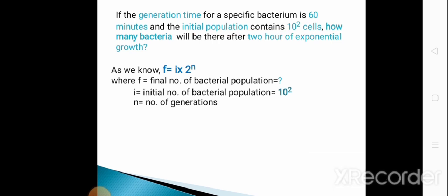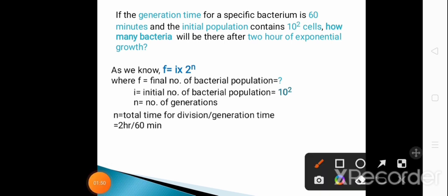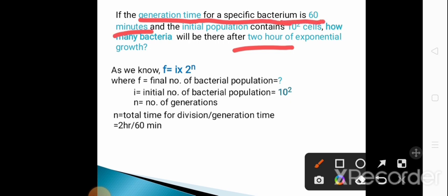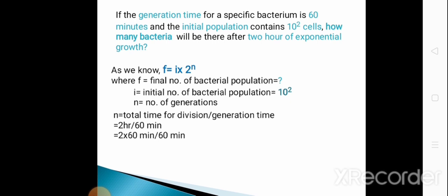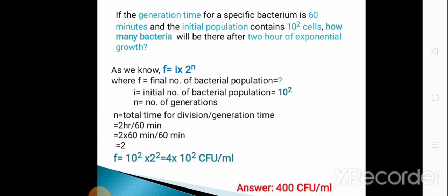N is the number of generations, which equals the total time for division (2 hours) divided by the generation time (60 minutes), so N = 2. Putting this value into the formula, the final number of bacteria after 2 hours of exponential growth will be 4 × 10² CFU/ml, that is 400 CFU/ml. CFU means colony forming unit.